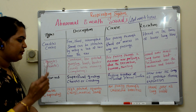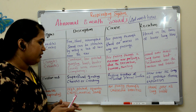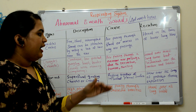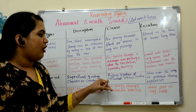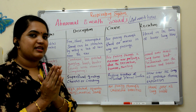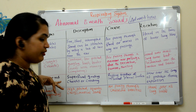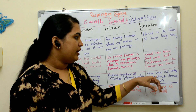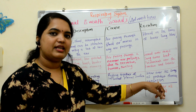The third sound is friction rub — a superficial grating or creaking sound, which is a harsh sound. The main cause is rubbing together of inflamed pleural surfaces. After inflammation of the pleural surface, the surfaces rub together producing the pleural friction rub. It is heard over areas of greatest thoracic expansion.